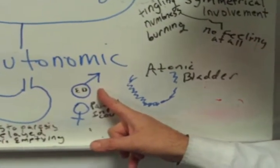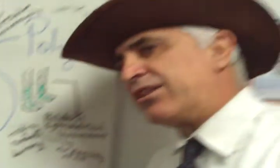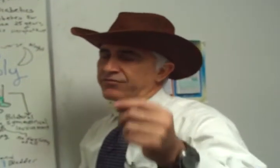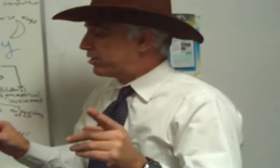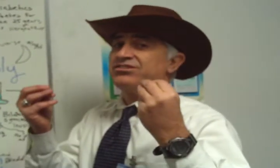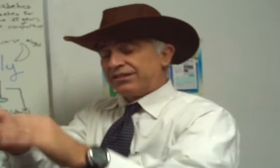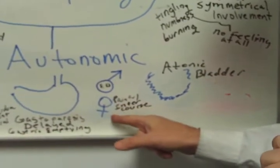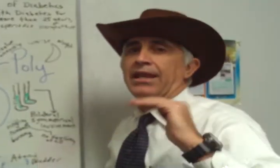Regarding sex: for the male, there may be erectile dysfunction. Also, the male may have what they call retrograde ejaculation. During ejaculation, the sympathetic nervous system closes off the bladder so semen doesn't enter it. But when the autonomic nervous system is damaged, the sphincter won't close and some or all of the semen may end up in the bladder. For the female, painful intercourse may be due to a lack of lubrication.